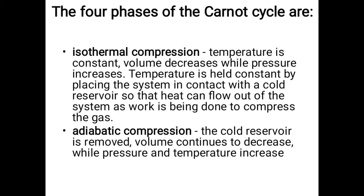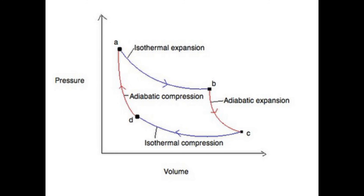Now we go to the graphical explanation. In the Carnot cycle, A to B is isothermal expansion — volume increases and pressure decreases. B to C is adiabatic expansion — further volume increase with no heat input and pressure decrease. C to D is isothermal compression, and D to A is adiabatic compression, where we work on the system and supply energy. All four steps are depicted in the form of a graph representing the Carnot cycle.